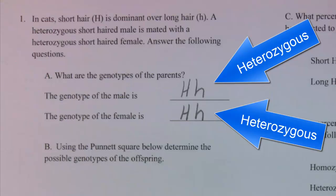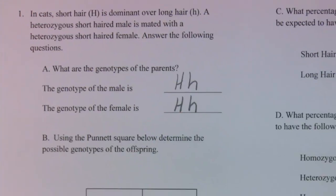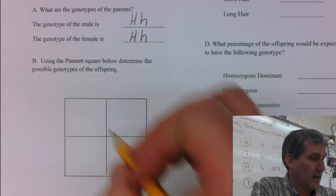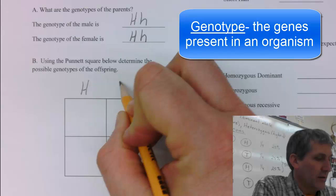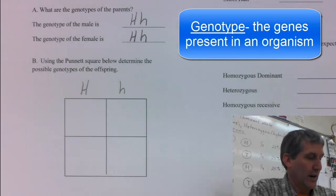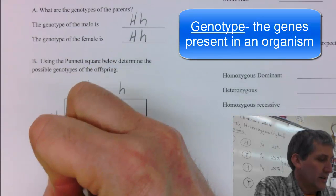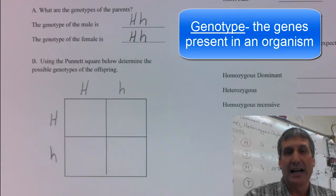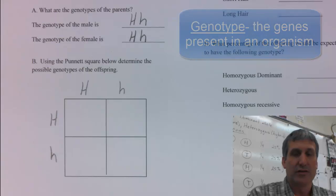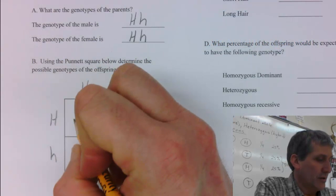Once you know the genotypes of the parents, you can plug them into the Punnett square and figure out the possible genotypes of their offspring. So you put one parent's genotype on the top of the Punnett square and the other parent's genotype on the side of the Punnett square and then you do the crosses. You usually write the capital dominant allele first.